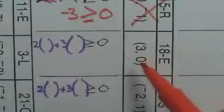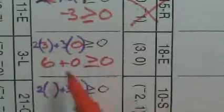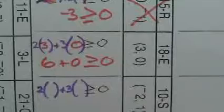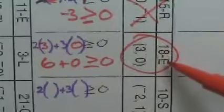Next, x is 3 and y is 0. 2 times 3 is 6, and 3 times 0 is 0. Is 6 greater than 0? Yes, it is. So go down to box 18 and put the letter E.